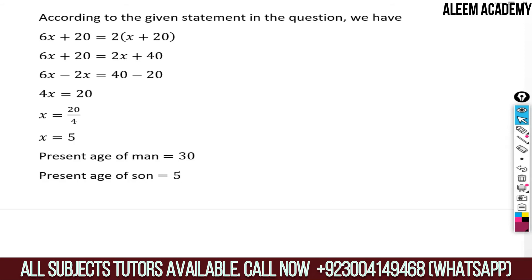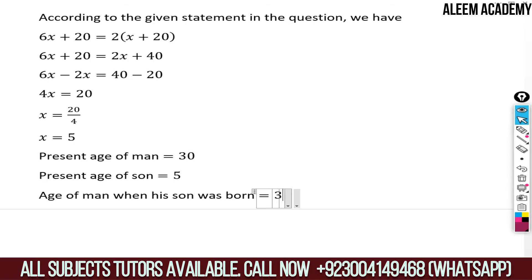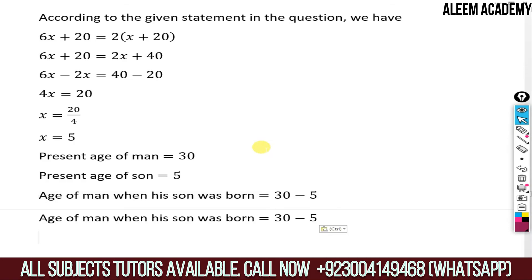Now, when was the son born? The son is currently 5 years old, so the son was born 5 years ago. The present age of man is 30, so 5 years ago the man's age was 30 minus 5, which equals 25. That is the answer — the age of the man when his son was born was 25. Thank you very much for your time. Stay blessed.